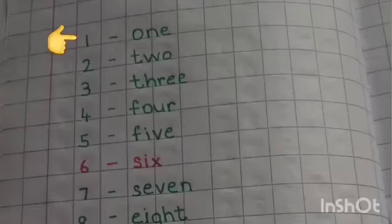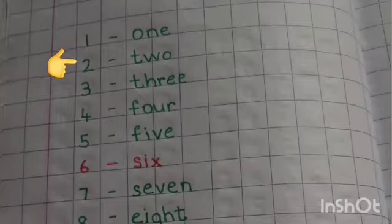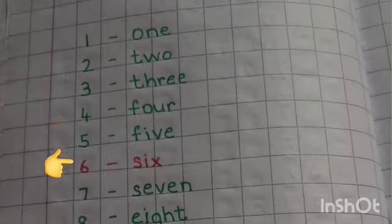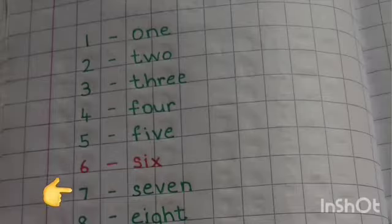So children, let's start our today's session by revising number names. 1 ONE, 2 TWO, 3 THREE, 4 FOUR, 5 FIVE, 6 SIX, 7 SEVEN, 8 EIGHT, 9 NINE, 10 TEN.